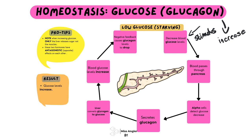Now our stimulus needs to go somewhere, and that is going to be our control center, which is going to be the pancreas. The pancreas is both the control center and the receptor because it has specialized cells within itself that are going to detect that there is not enough glucose.